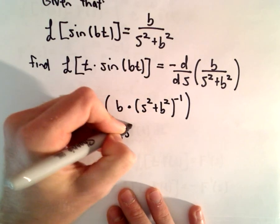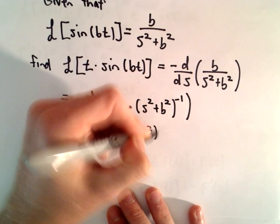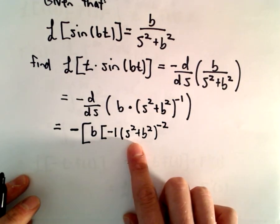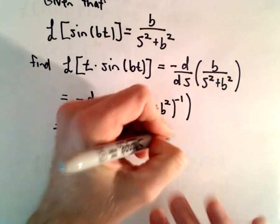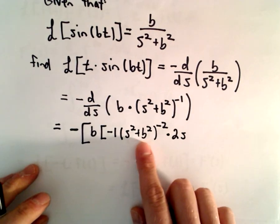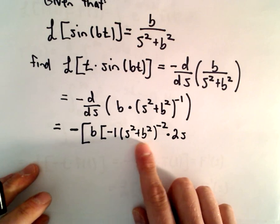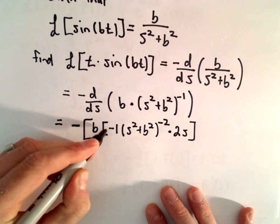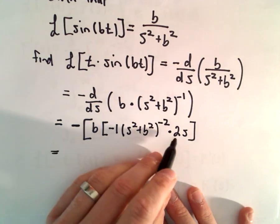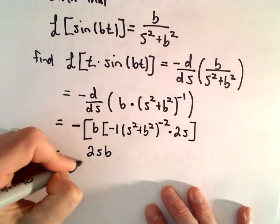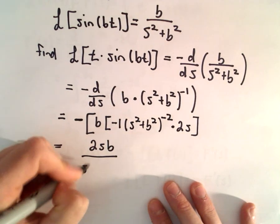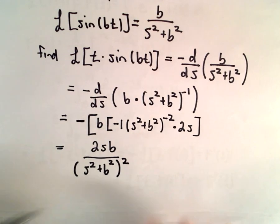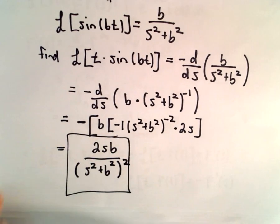When we take the derivative, the negative one comes out front, we leave the inside alone and subtract one from the exponent. Taking the derivative with respect to s, the derivative of s squared gives 2s, and since we're treating b as a constant, the derivative of b squared is simply zero. Our two negatives make a positive, leaving 2sb in the numerator, and we put s squared plus b squared, squared, back in the denominator. And that's all there is to it.